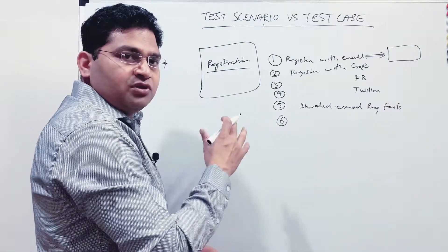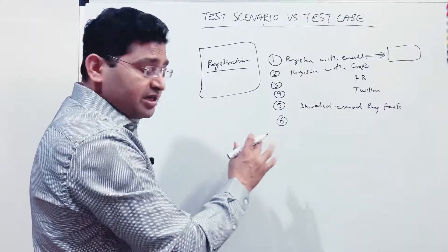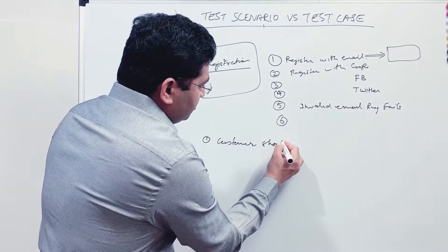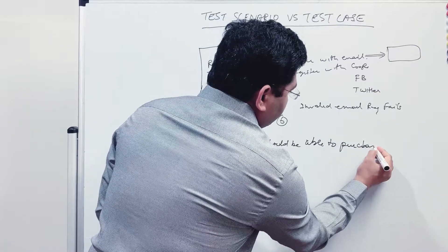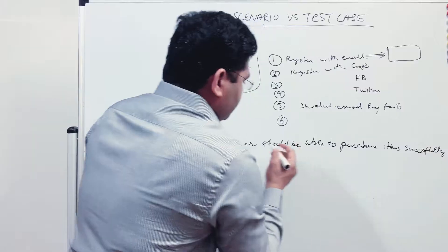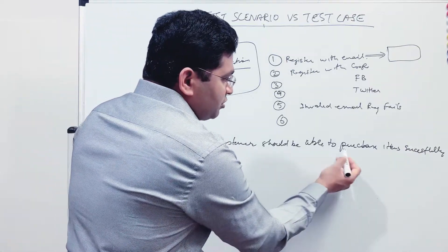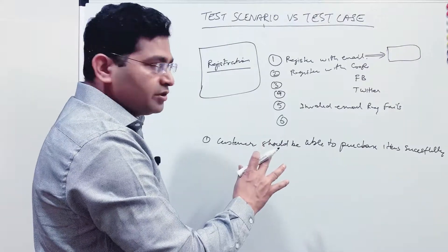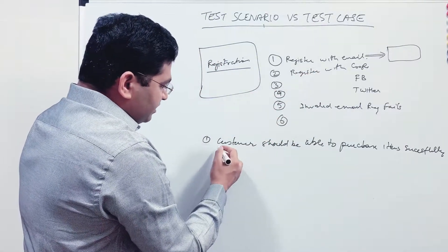For an end-to-end scenario, you write a one-liner such as: 'Customer should be able to purchase items successfully.' This is a high-level end-to-end scenario for an e-commerce website. In this case, there are many functionalities involved. This scenario covers the full purchase flow from start to finish.